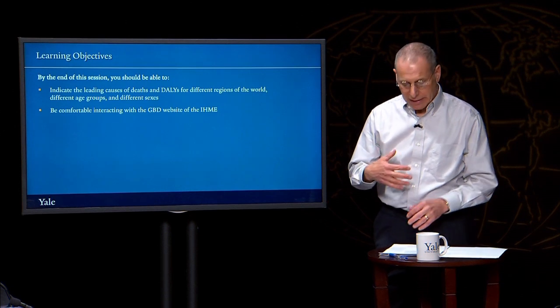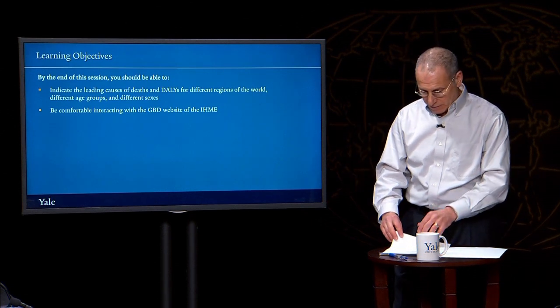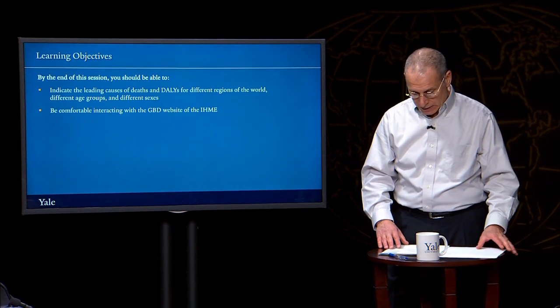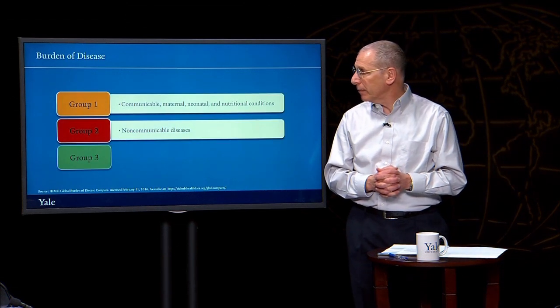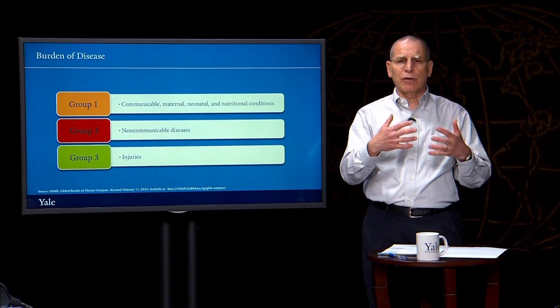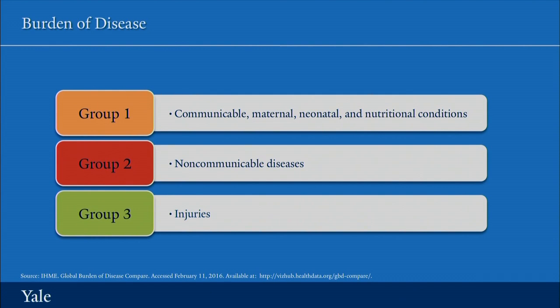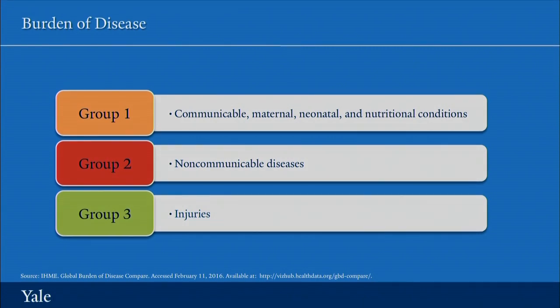Using this data, let's look first at the causes of death by country income group, age, and sex — then we'll look at DALYs for the same. In the earlier global burden of disease studies, the authors divided causes of illness and death into three broad groups: Group One — communicable, maternal, neonatal, and nutritional disorders; Group Two — non-communicable diseases; and Group Three — injuries.